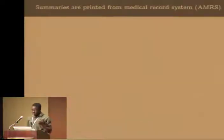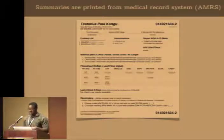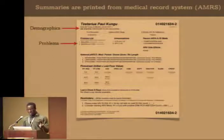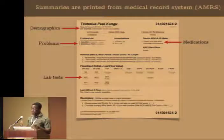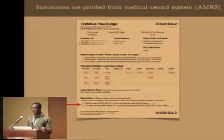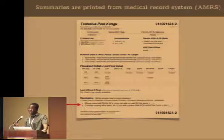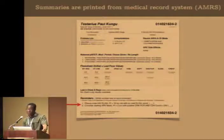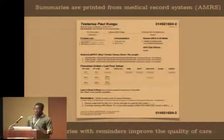A clinical summary is a one-page sheet generated from AMPATH's medical record system, or AMRS, giving a nice overview of a patient's data — demographics, current problems, recent medications, and recent lab tests. Nurses print the summary when the patient arrives and give it to the doctor. One of the most useful features are patient-specific reminders alerting the doctor when a patient is deviating from complex care protocols, such as being late for a required test according to Ministry of Health or AMPATH guidelines. There is convincing evidence from the developed world and at AMPATH that these summaries with reminders really improve the quality of care.